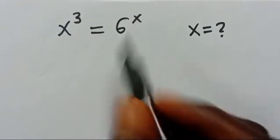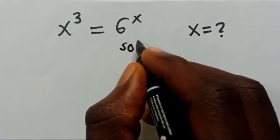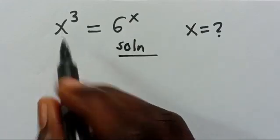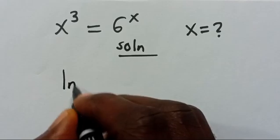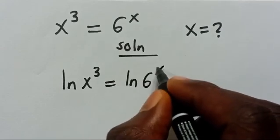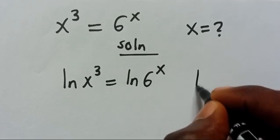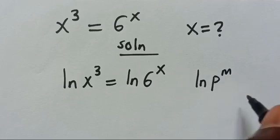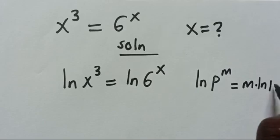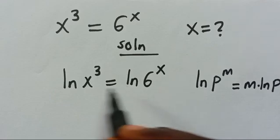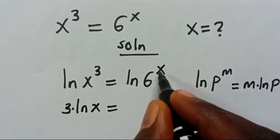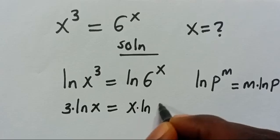x to the power of 3 equals 6 to the power of x — let's find the solution. This is an exponential equation, so we introduce the natural log. We take ln of x to the power of 3 equals ln of 6 to the power of x. Remember that ln of p to the power of m brings the exponent down: m multiplied by ln of p. Applying this, 3 times ln(x) equals x multiplied by ln(6).